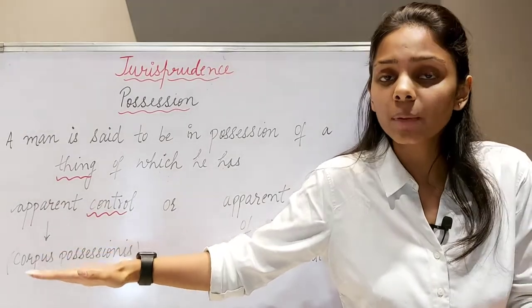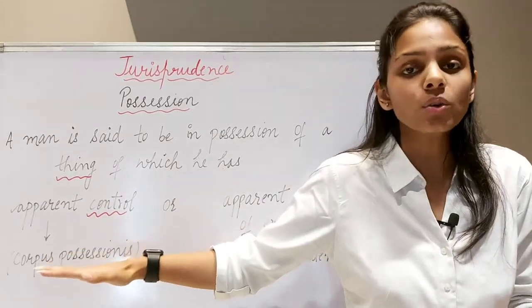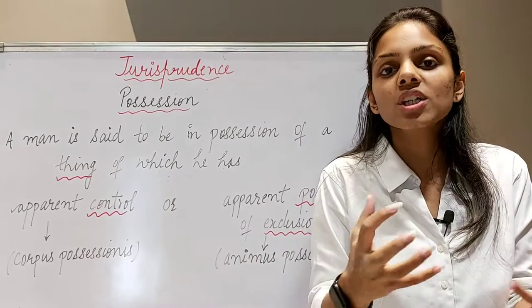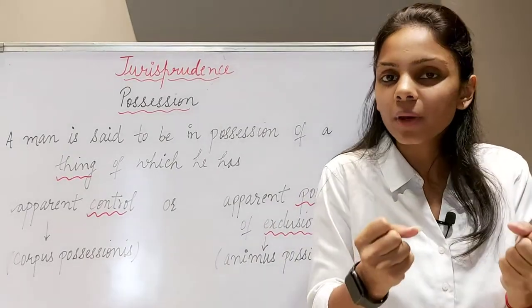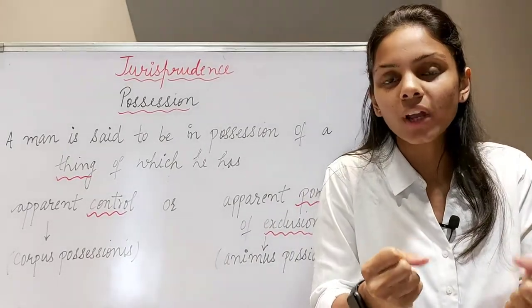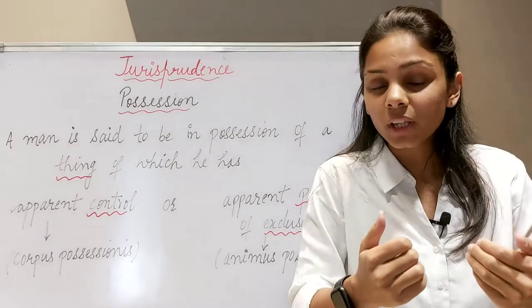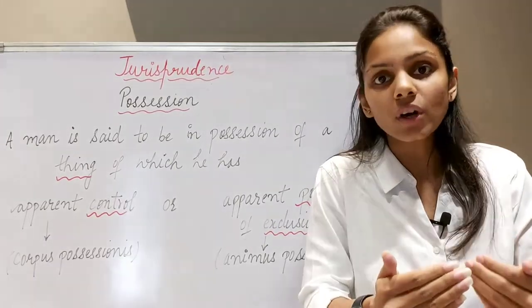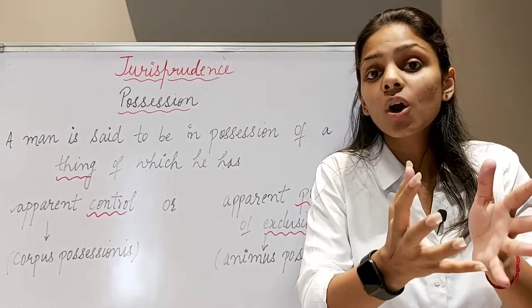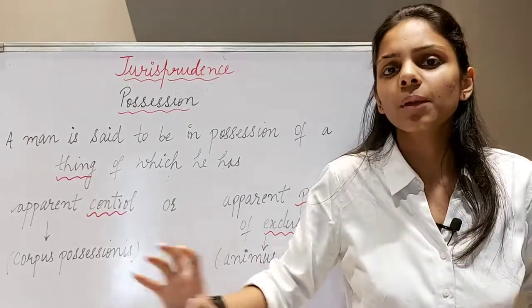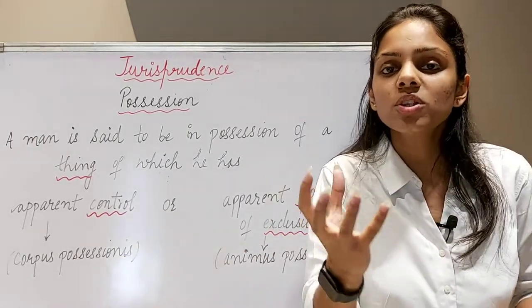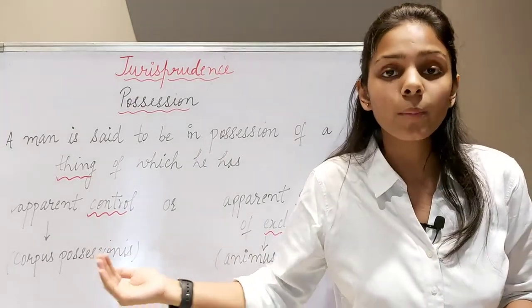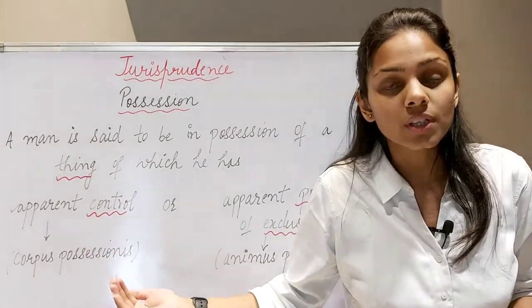Apparent control ka matlab hai physical control and custody. Woh meri, obviously agar cheez meri haath mein hai, toh main kahungi ki meri paas uska apparent control hai. Agar koi cheez haath mein hai, toh matlab meri physical relationship hai, us cheez ka physical contact hai — isi liye hum kahenge ki uska corpus meri paas hai. Corpus matlab kiya hoti hai? Koi bhi cheez ka apne paas hona — physical element ko corpus kehte hain. Toh usko hum bolenge corpus possessionis.